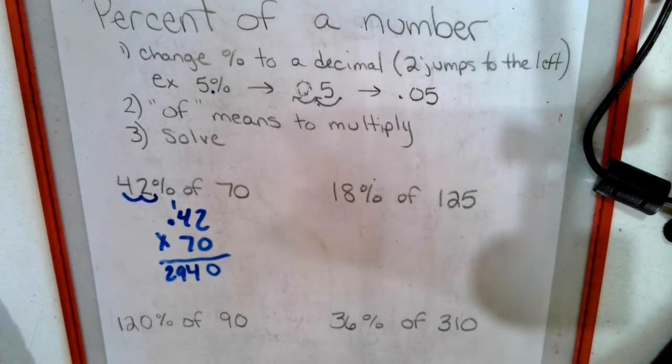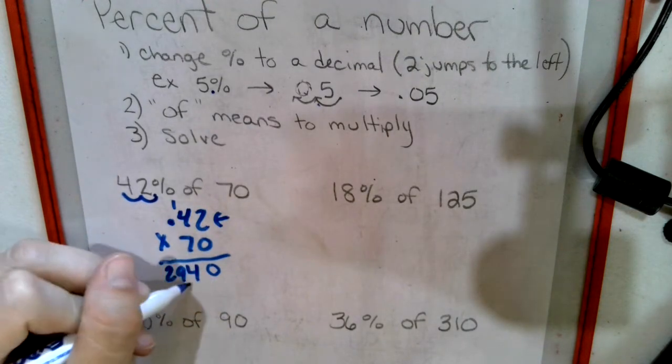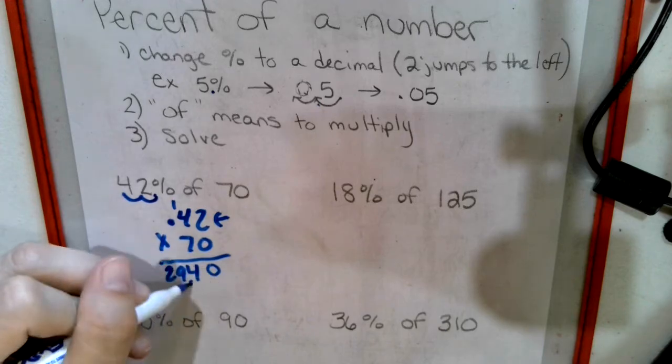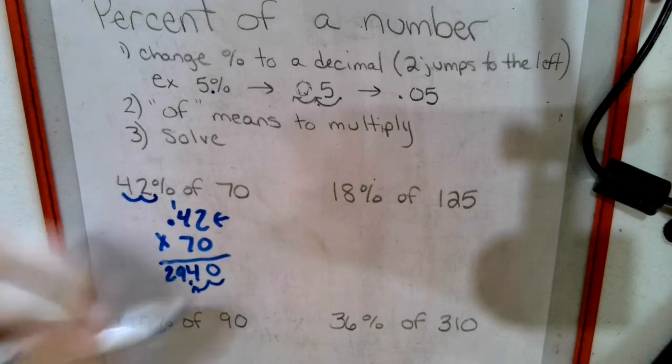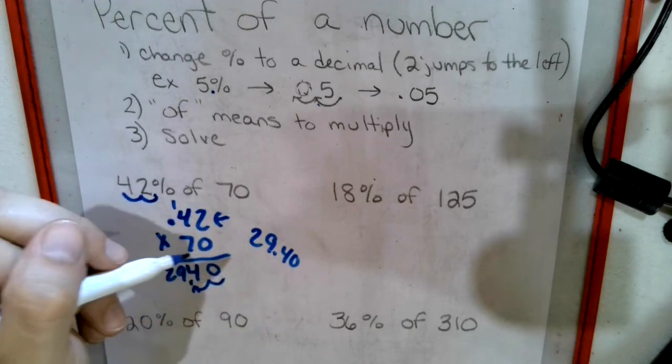We have two numbers after decimal points, so we jump it back in two spots, one, two. Our answer is 29.40, which is 29 and 40 hundredths.